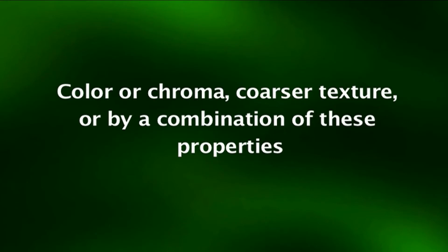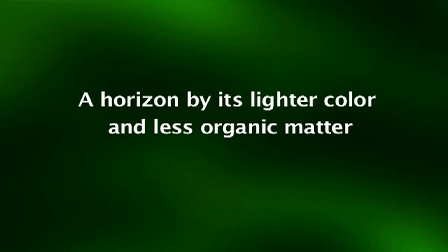In some soils the color of the E horizon is that of the sand and silt particles, but in many soils coatings of iron oxide or other compounds mask the color of the primary particles. An E horizon is most commonly differentiated from an overlying A horizon by its lighter color and less organic matter. The E horizon is commonly near the surface, below an O or A horizon and above a B horizon.